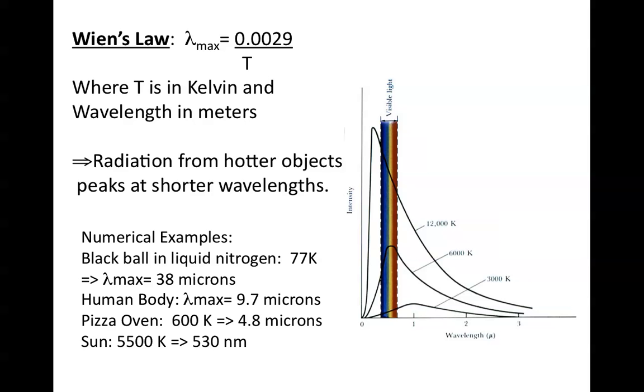Where the temperature is in degrees Kelvin, that is, degrees above absolute zero, and the wavelength is in meters. That is, radiation from hotter objects peaks at shorter wavelengths. If T is bigger, lambda is smaller.